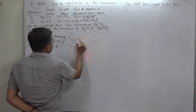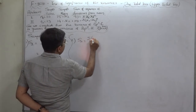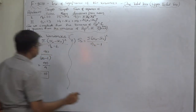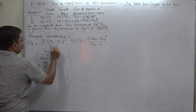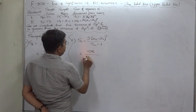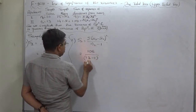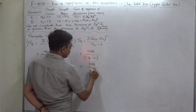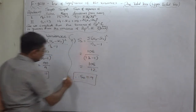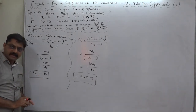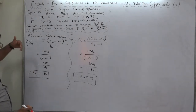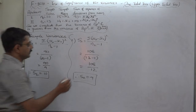For the second, S2² = Σ(x2 − x̄2)² divided by (n2 − 1), which is 108 divided by 12, so S2² equals 9. Since the first sample variance is greater, it will be treated as the variance from the first population.